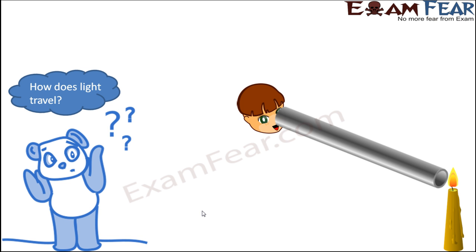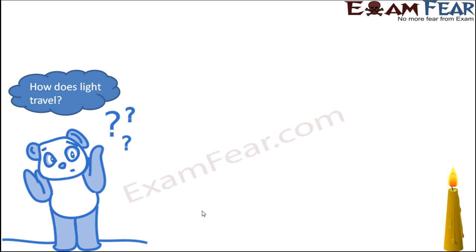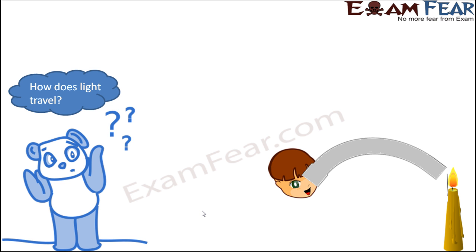Now try the same thing through a bent tube — bend a flexible tube and look through it. This time you will not be able to see the light; it will be completely dark inside. That is because light travels along a straight path. When viewing through a straight tube you can see the light, but when the tube is bent, light cannot bend to follow it — light always travels in a straight path.